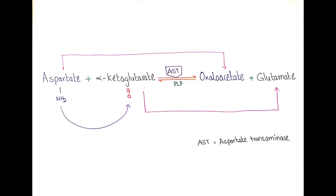In this picture you can see that aspartate, which is an amino acid, is transferring its amino group to a keto acid — alpha-ketoglutarate. When this happens, aspartate is converted into a new keto acid, oxaloacetate, and alpha-ketoglutarate after accepting the amino group is converted into glutamate.